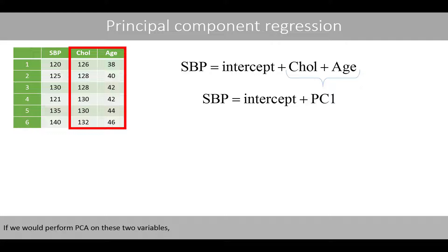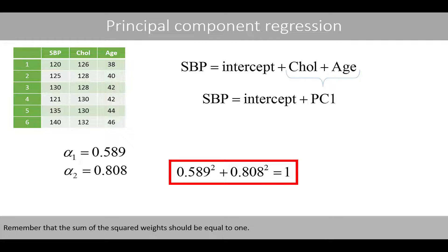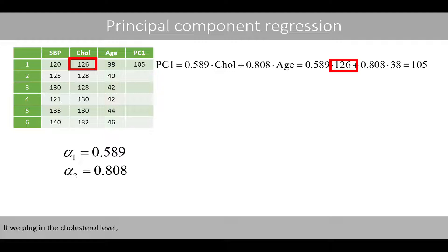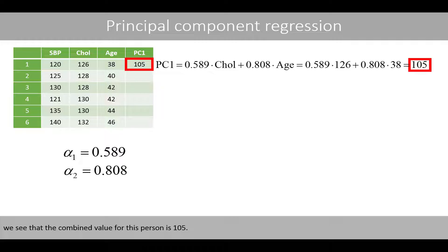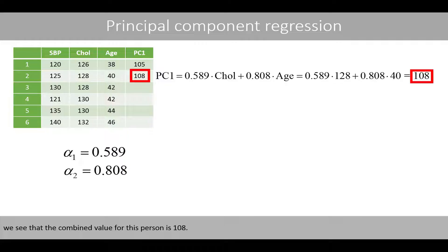If we perform PCA on the two variables, we get weights representing the first eigenvector of the covariance matrix. The sum of the squared weights equals one. Based on these weights, we can calculate PC1, the combined variable. Plugging in the cholesterol level and age of the first person gives a combined value of 105, and for the second person, a combined value of 108.